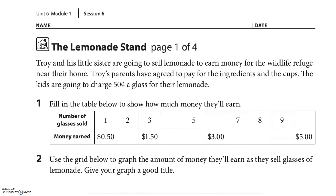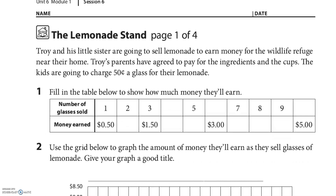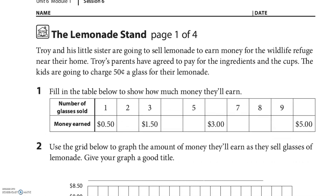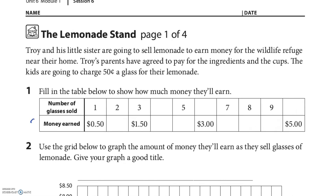So the lemonade stands. Troy and his sister are going to sell lemonade to earn money for the wildlife refuge near their home. Troy's parents have agreed to pay for the ingredients and the cups. The kids are going to charge 50 cents a glass. They want us to fill in this table — the first one is 50 cents, so they sell two, it's another 50 cents. I'm going to put the dollar sign right here so I can just put the money in.